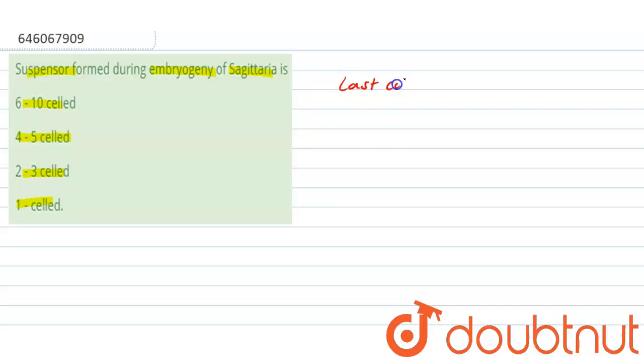So the last cell of suspensor is known as hypophysis. And it forms a radical tip of seed. Whereas in Sagittaria type, the early development of dicot and monocot embryos are similar up to end stage.